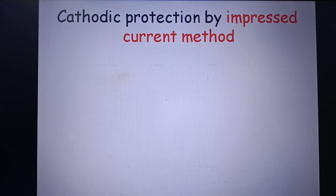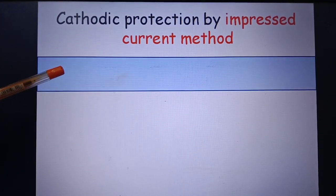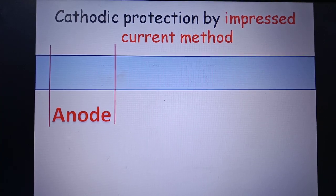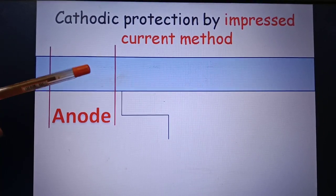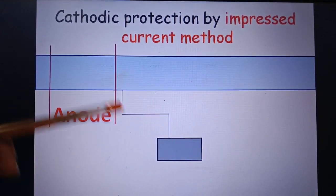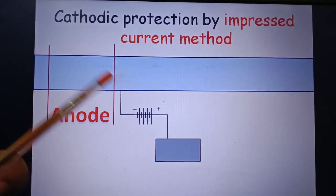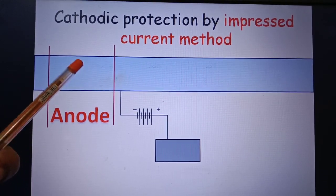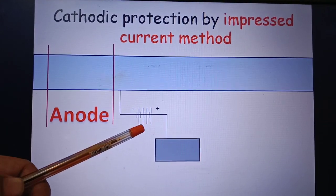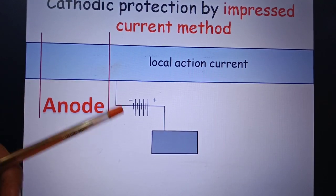The second method of cathodic protection is the impressed current method. We provide external current to protect the metal. This is the metal surface; one part is acting as anode, generating electrons that flow toward the cathode region. We connect this metal to another electrode and apply an external voltage. If we apply a potential equivalent to the local action current, then there will be no flow of electrons.